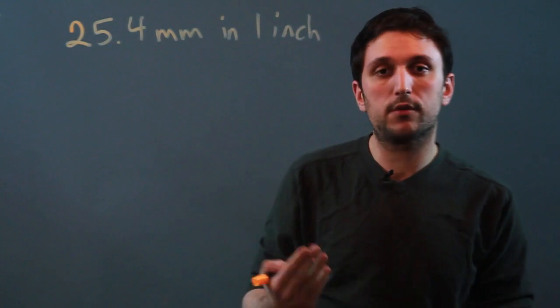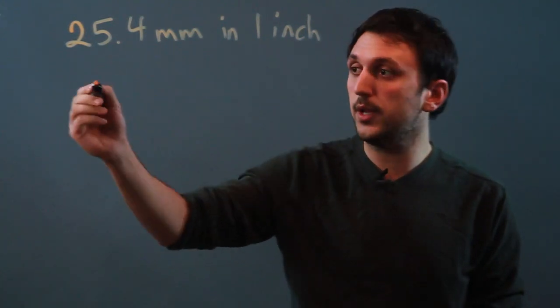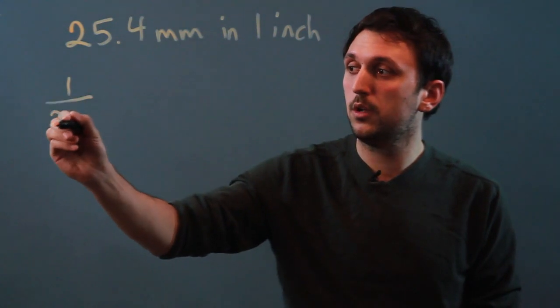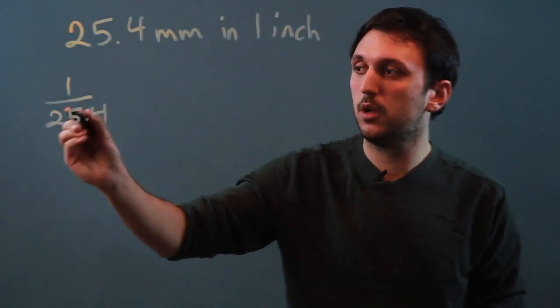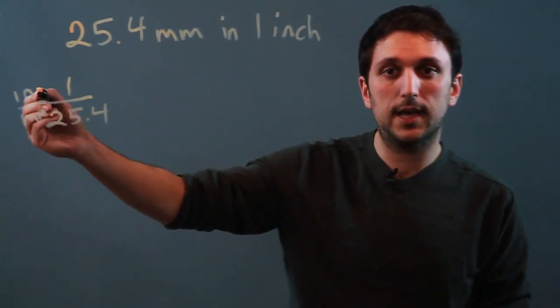So if you're trying to convert something larger, you want to set up a direct proportion. The way I like to do it is 1 over 25.4, and if you need to, you can write inches over millimeters, something like that.